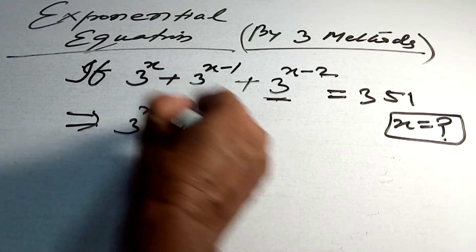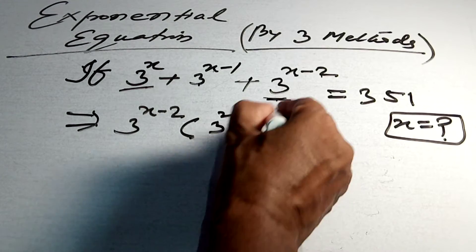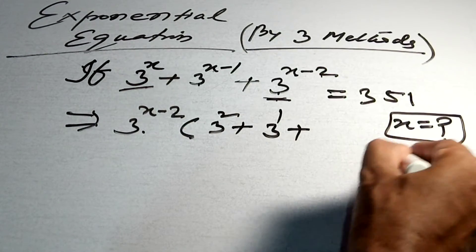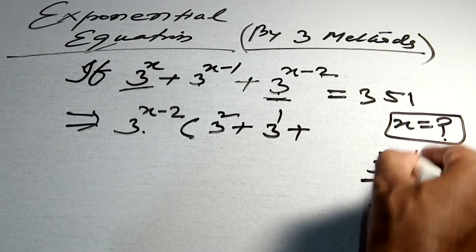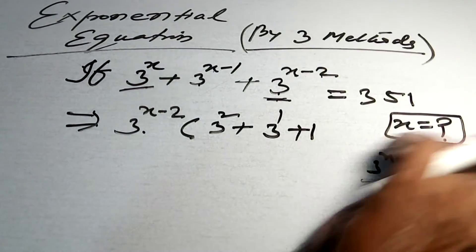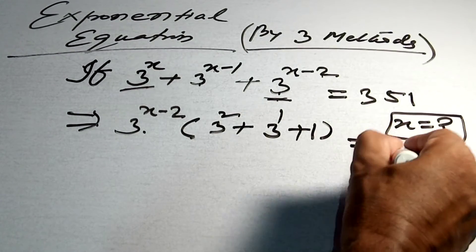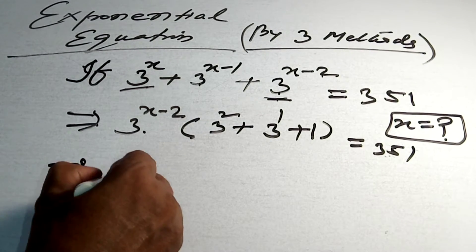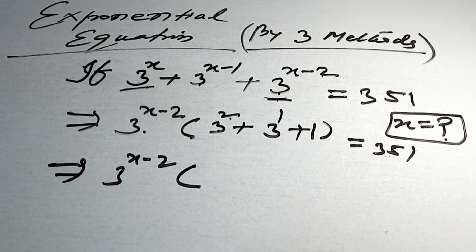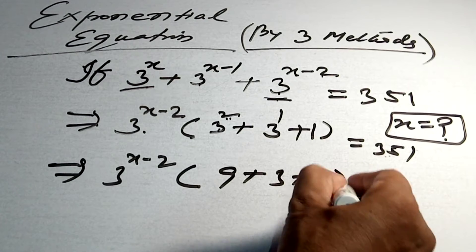You can write 3 to the power x like this. Similarly, 3 to the power x minus 1 gives 3 to the power 1, and the last term gives 1. So this equals 3 to the power x minus 2, multiplied by the bracket: 9 plus 3 plus 1, equal to 351.